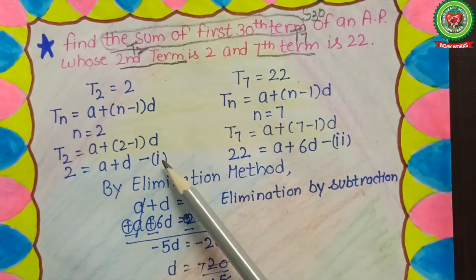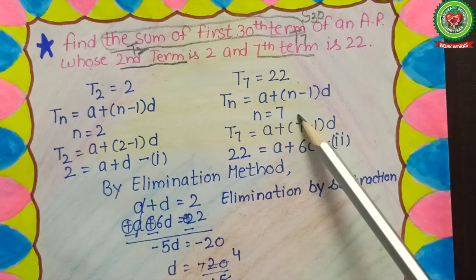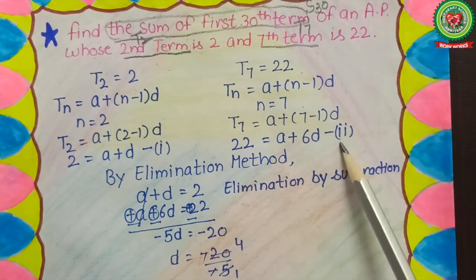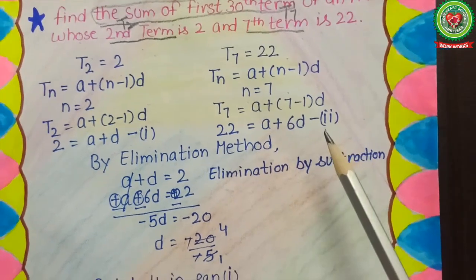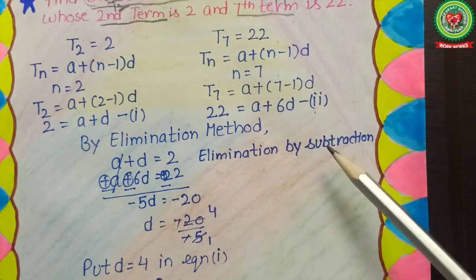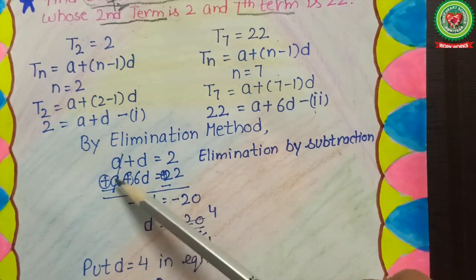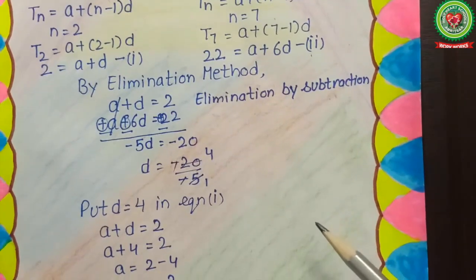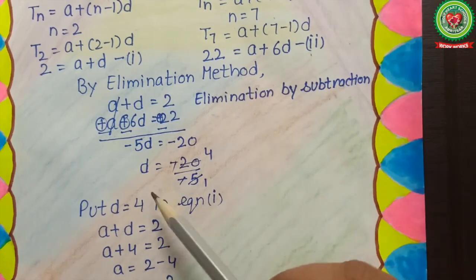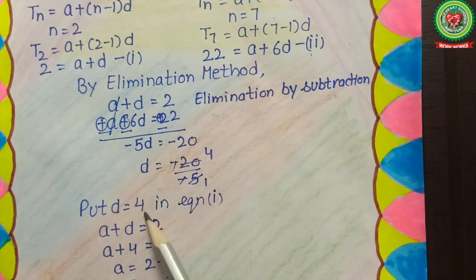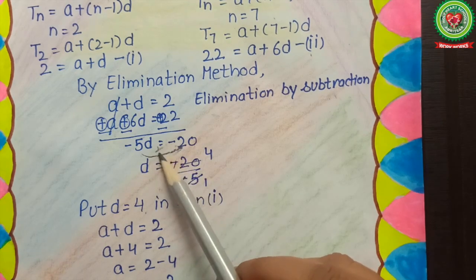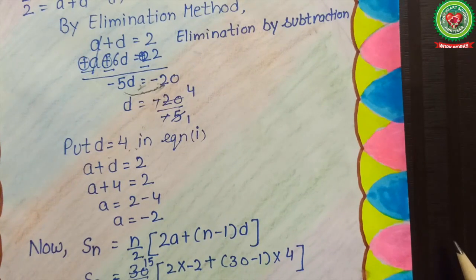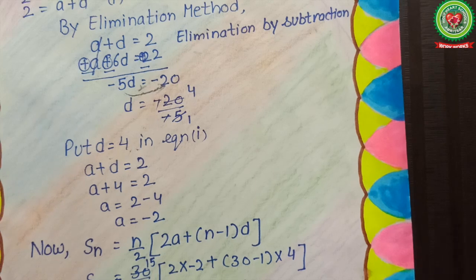By applying the formula for both t2 and t7, we get two linear equations with two variables. We already know this type of problem — we solve it by the elimination method. Since both variable terms are the same, we apply elimination by subtraction. Solving gives us the value of d = 4, since dividing by −5 gives d = 4.